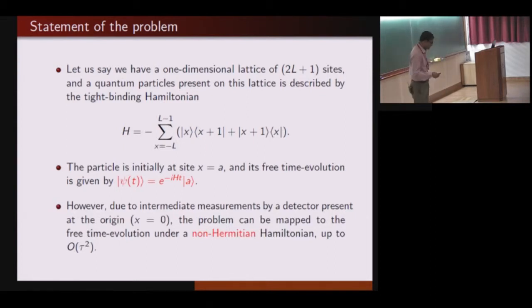Now the question is, can a similar evolution operator be defined even if we place the detector, so that this evolution operator will mimic the effect of the detector? That will not be the same Hamiltonian, but some other effective Hamiltonian. And it turns out that can be defined. However, this Hamiltonian has to be non-Hermitian in nature. We will see why it needs to be non-Hermitian.